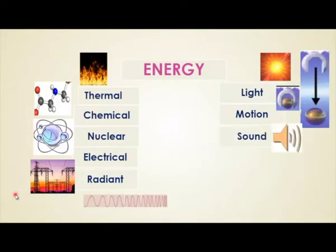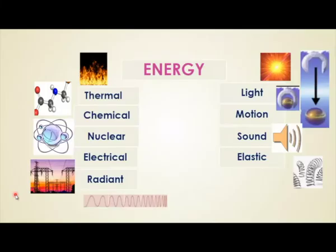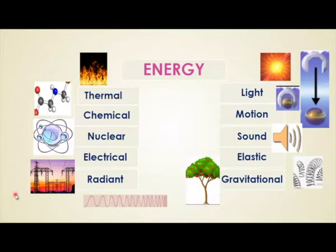Next one is sound. Sound waves also have energy, and they are produced by vibration of materials like a diaphragm. Next one is elastic energy. Elastic materials like a spring, if compressed, store energy. Once released, they return to the original position, releasing the stored energy — that is called elastic energy. Gravitational energy is due to gravity. Like a fruit falling from a tree, when the fruit is in the tree it stores energy, and the energy released during falling is called gravitational energy.